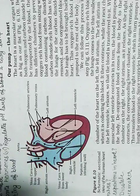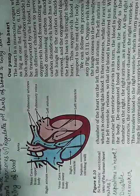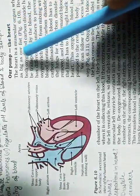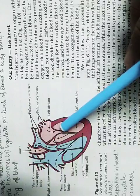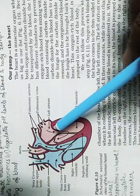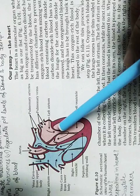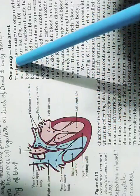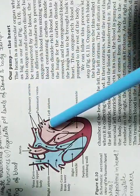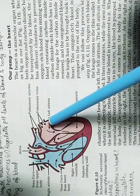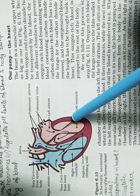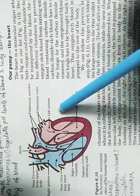In today's video we are going to learn about the structure and function of the heart. The main function of our heart is pumping of the blood. The heart is an organ present in the thoracic cavity — the chest cavity. It is the pumping organ of our body which pumps blood to all parts of the body, and it is present between the two lobes of the lungs, protected by the ribs, sternum, and backbone.